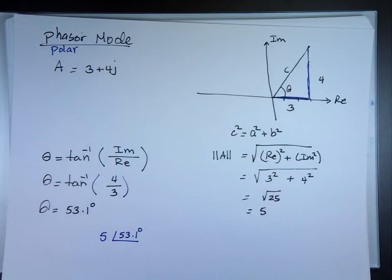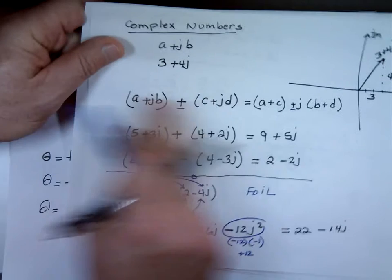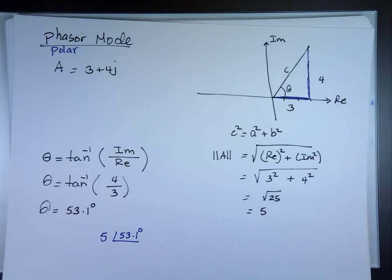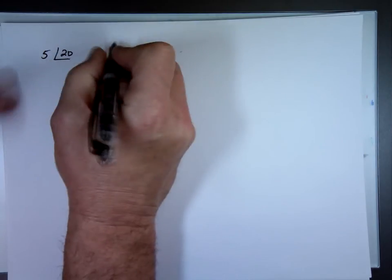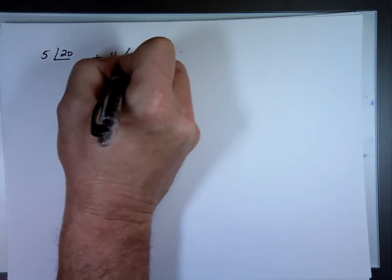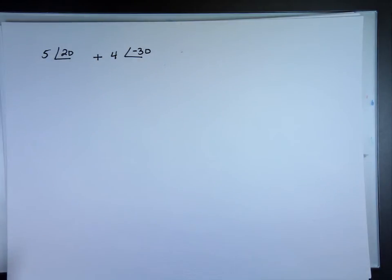So how do we add in polar? You can't really add in polar — that's the problem with it. Rectangular is beautiful to add in: you just take the real to the real, the imaginary to the imaginary. You cannot add in polar. So if I want to add 5 angle 20 and 4 angle negative 30, I've got to convert them back to rectangular if I don't have one of those calculators.